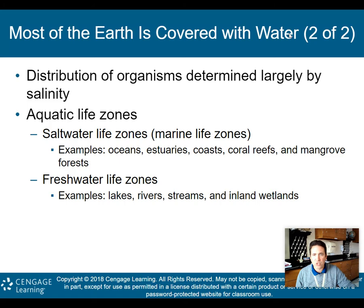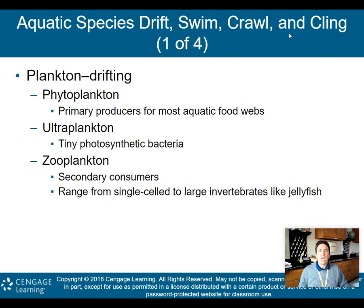Saltwater life zones — marine life zones — include oceans, estuaries, coasts, coral reefs, and mangrove forests, and will have a different distribution of organisms compared to freshwater life zones like lakes, rivers, streams, and inland wetlands. We're going to talk about these zones in more detail as we go through this chapter.